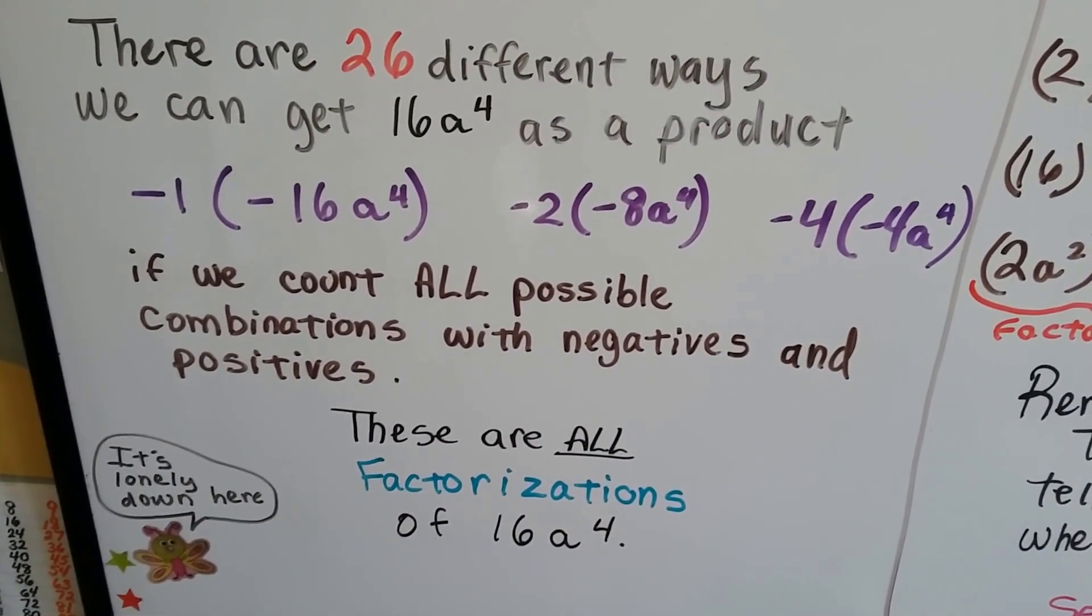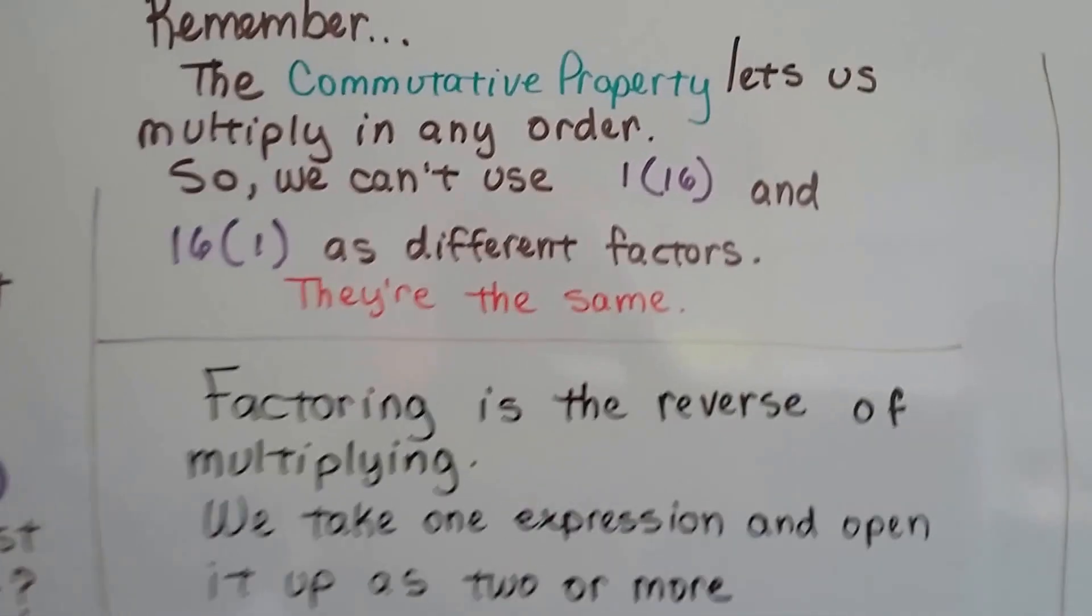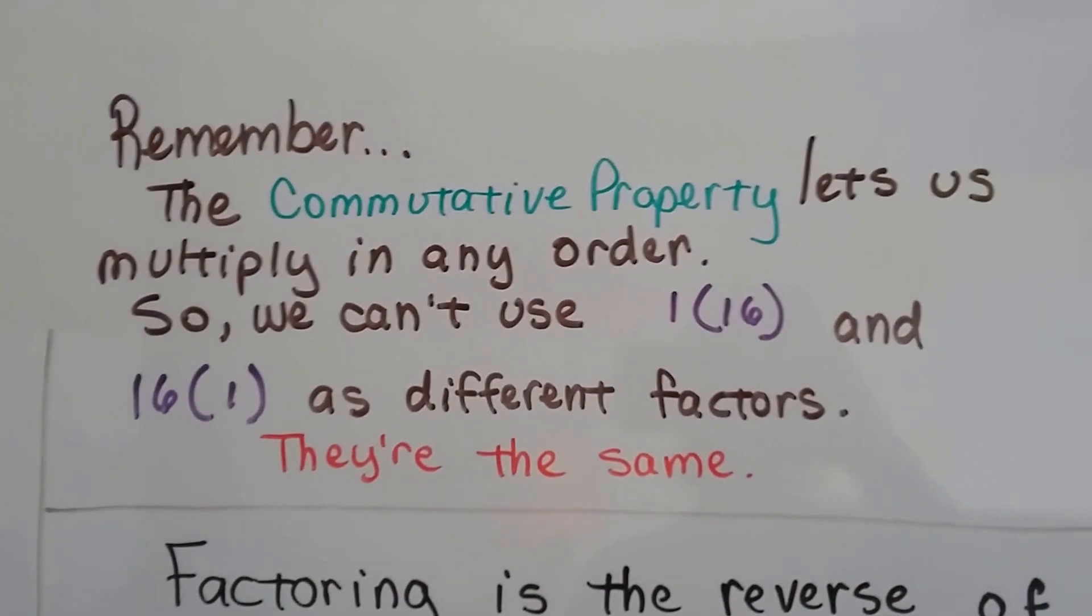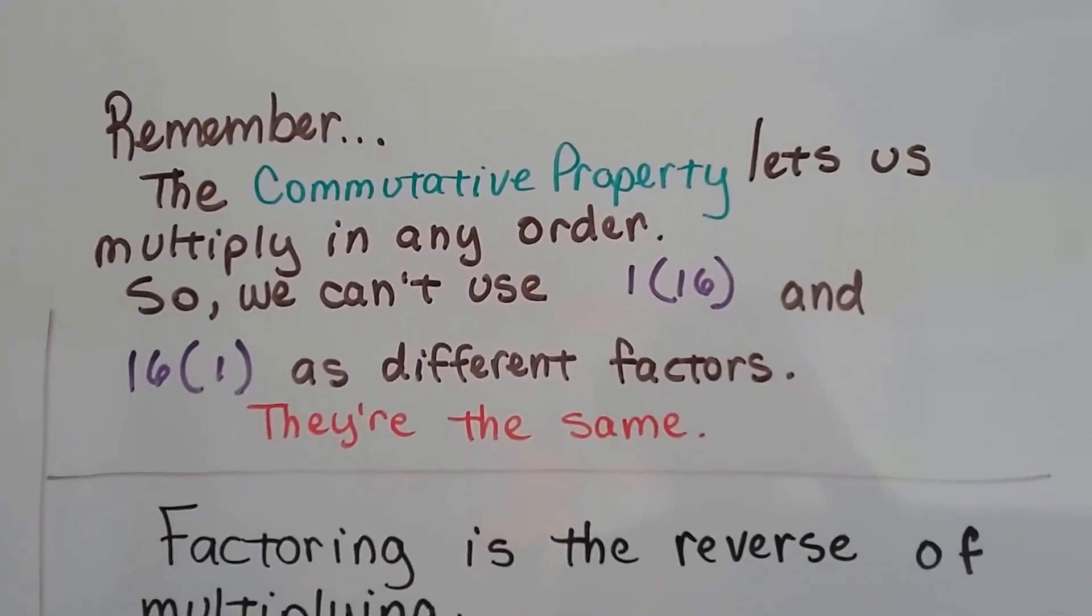These are all factorizations of 16a to the 4th power. Now remember, the commutative property lets us multiply in any order. So we can't use 1 times 16 and 16 times 1 as different factors. They're the same. It's a 1 and a 16.